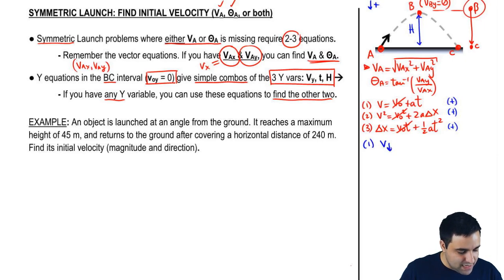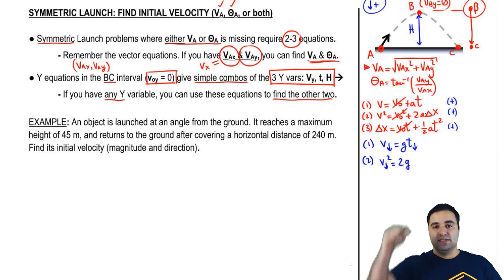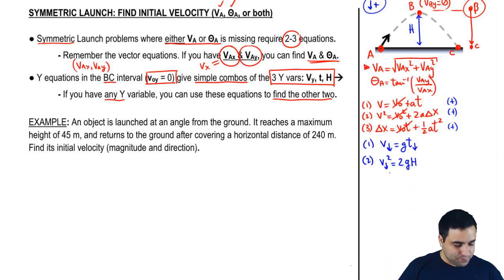So let's work this out. This is the velocity going down, which is gravity going down is positive times the time, but it's only the time to go down. So the second equation is the velocity going down squared equals two gravity times delta Y going down, but I'm just going to call this H. And three is delta X becomes delta Y, but I'm just going to call it H, equals a half of GT squared. And this is the time to go down.